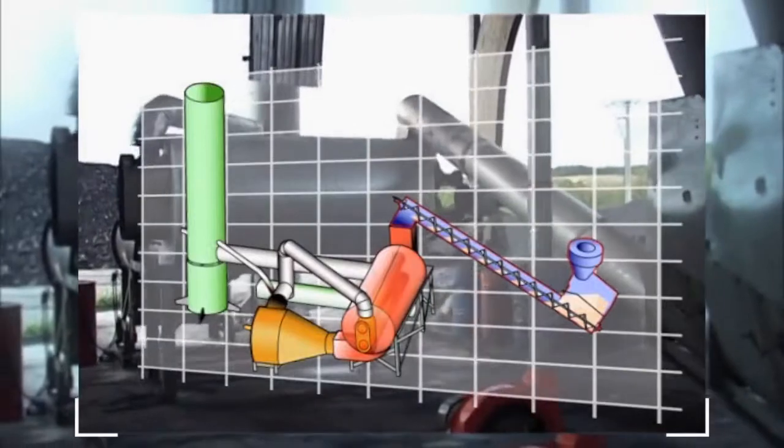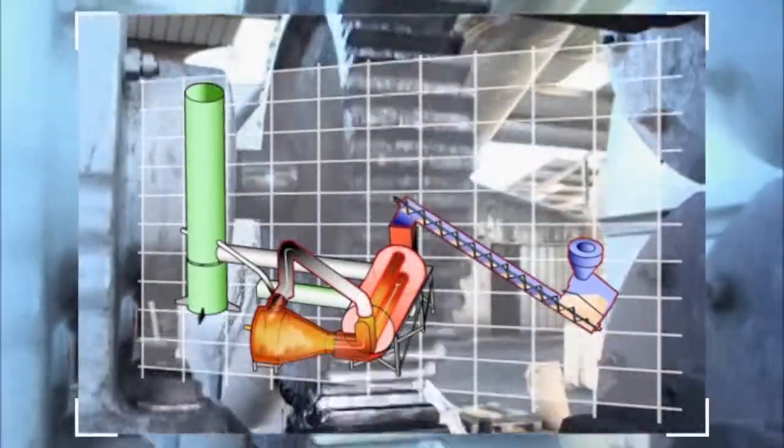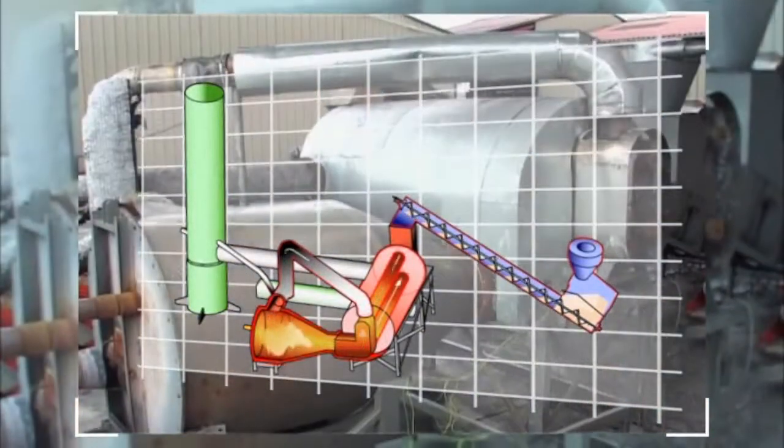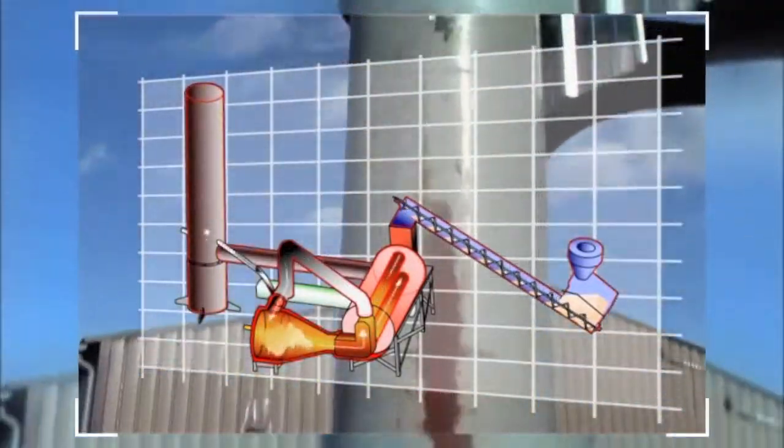Once the carbonization temperature is reached, the burner is turned off, and all the pyrolytic gases are diverted to the post-combustion chamber, where they're mixed with heated air to ensure their combustion.